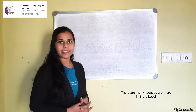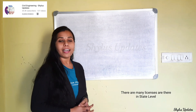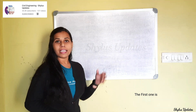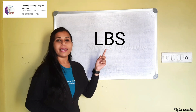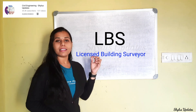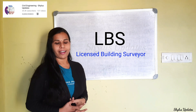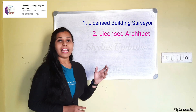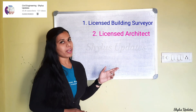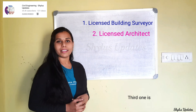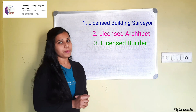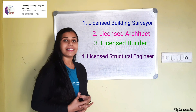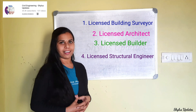There are many licenses out there at the state level. The first one is LBS — Licensed Building Surveyor. The second one is Licensed Architect. The third one is Licensed Builder. The fourth one is Licensed Structural Engineer.